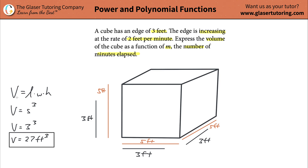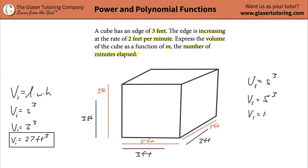That's the initial volume of the cube. What would be the volume after one minute elapses? After one minute, the side went to five feet, so the volume is five cubed, which works out to be 125 cubic feet.